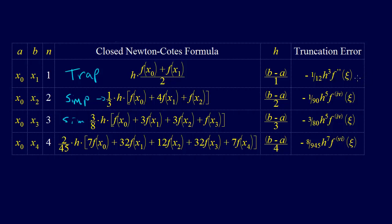The truncation error for each of these is really interesting. So if we look at the trapezoid rule, we see that the error is proportional to the second derivative, h cubed times the second derivative. Well, that's interesting.